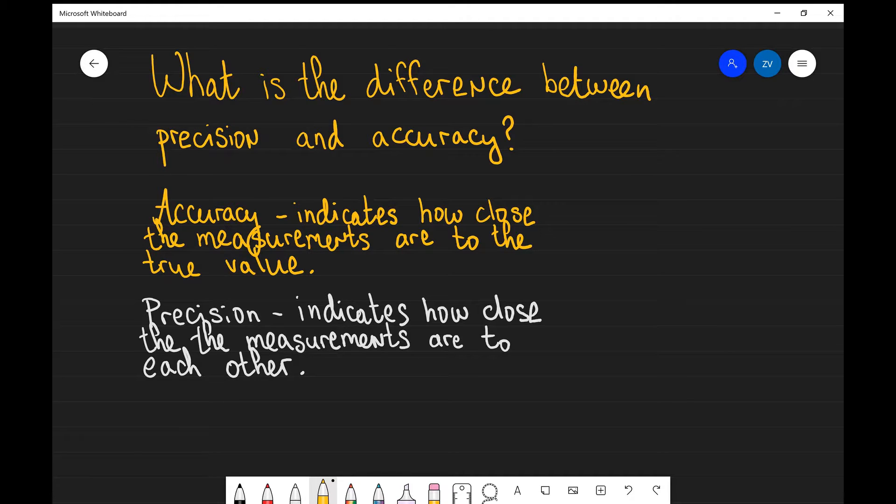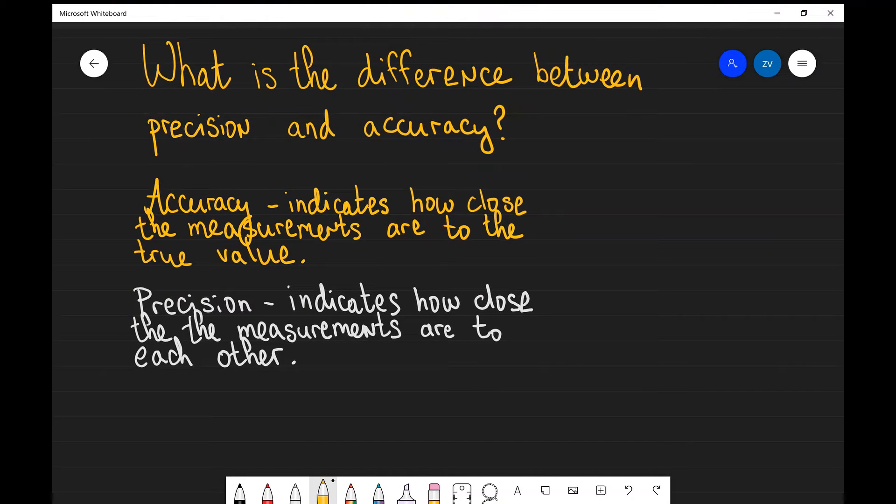What we're going to be discussing today is the difference between precision and accuracy. Let's start off with accuracy. This indicates how close each of the measurements are to the true value.